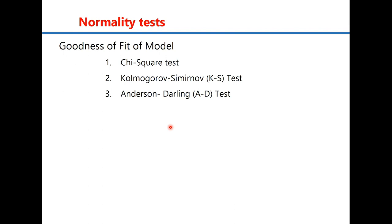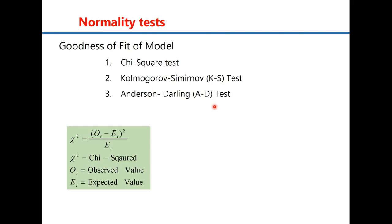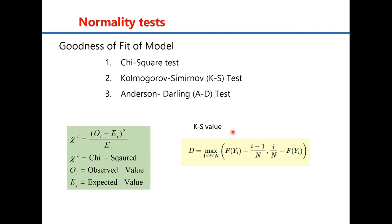Whether data fits a normal distribution can be determined from a goodness-of-fit test. There are three tests: the chi-square test, the KS test, and the AD test. Of these, chi-square is most commonly used, KS is also quite popular, and the AD test is less common. The chi-square value is given by the equation: χ² = Σ (Oᵢ − Eᵢ)² / Eᵢ, where Oᵢ is the observed frequency and Eᵢ is the expected frequency. The KS value is the maximum difference between the expected and observed cumulative frequency.